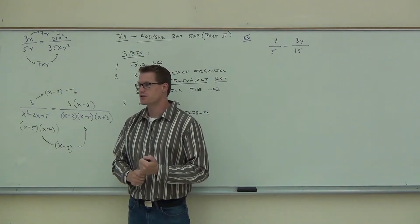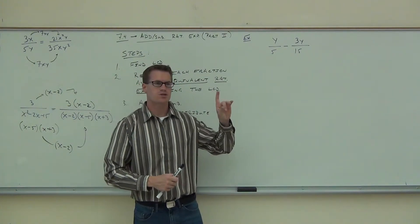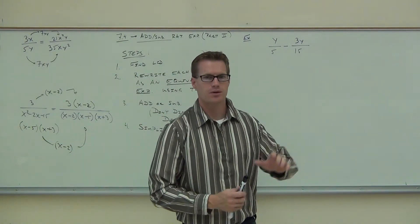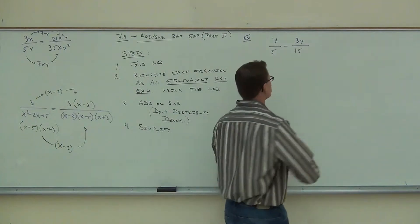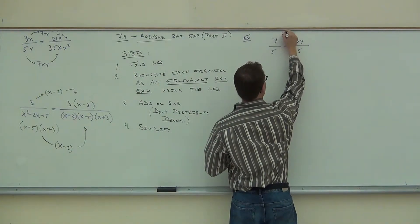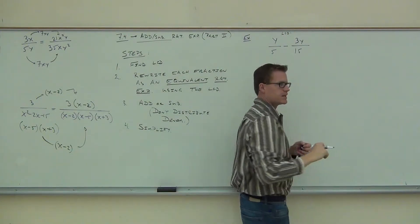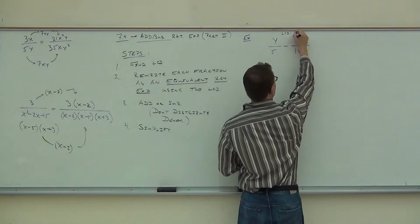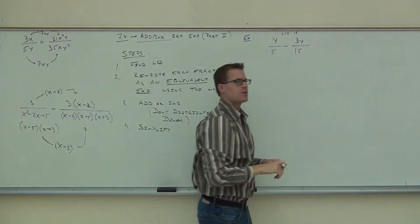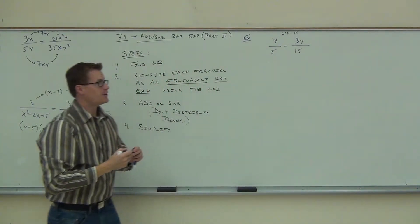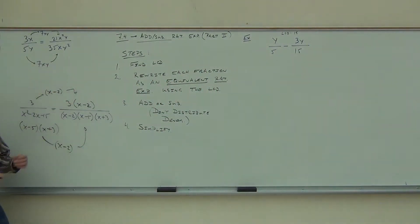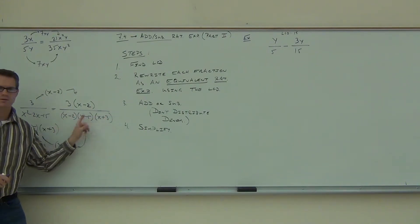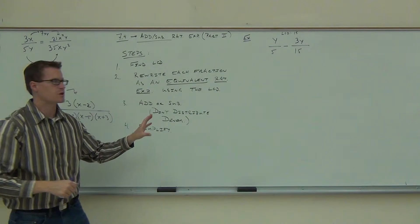No common denominator — one's five, one's fifteen, so those are different. That says you do the first step, which is find your LCD. Take five seconds right now, find your LCD and write it down. LCD in our case is fifteen. Here's how we use that fifteen: it's very much like having this part right here, so the fifteen is taking the place of the lower part of your second fraction on the equivalent rational expressions.